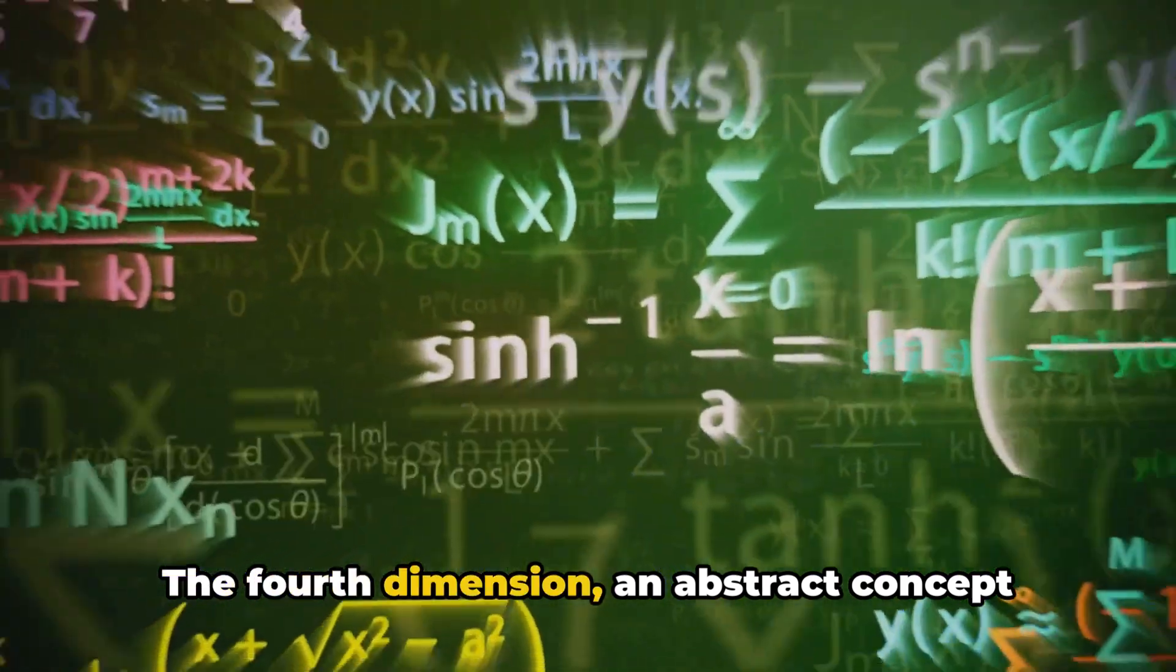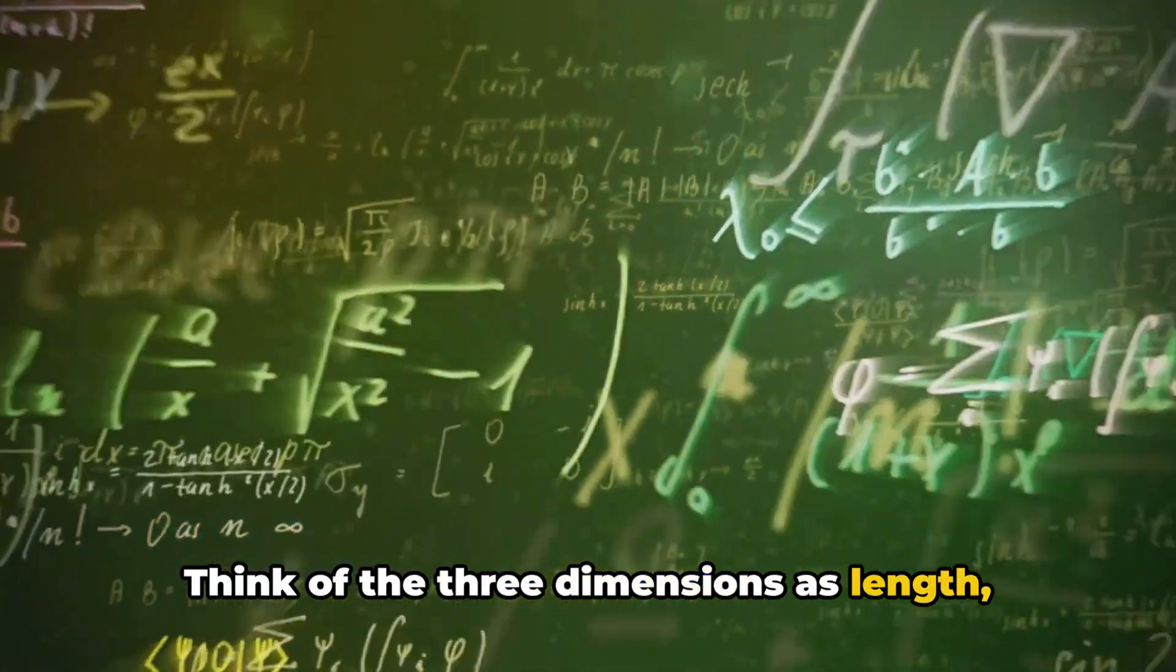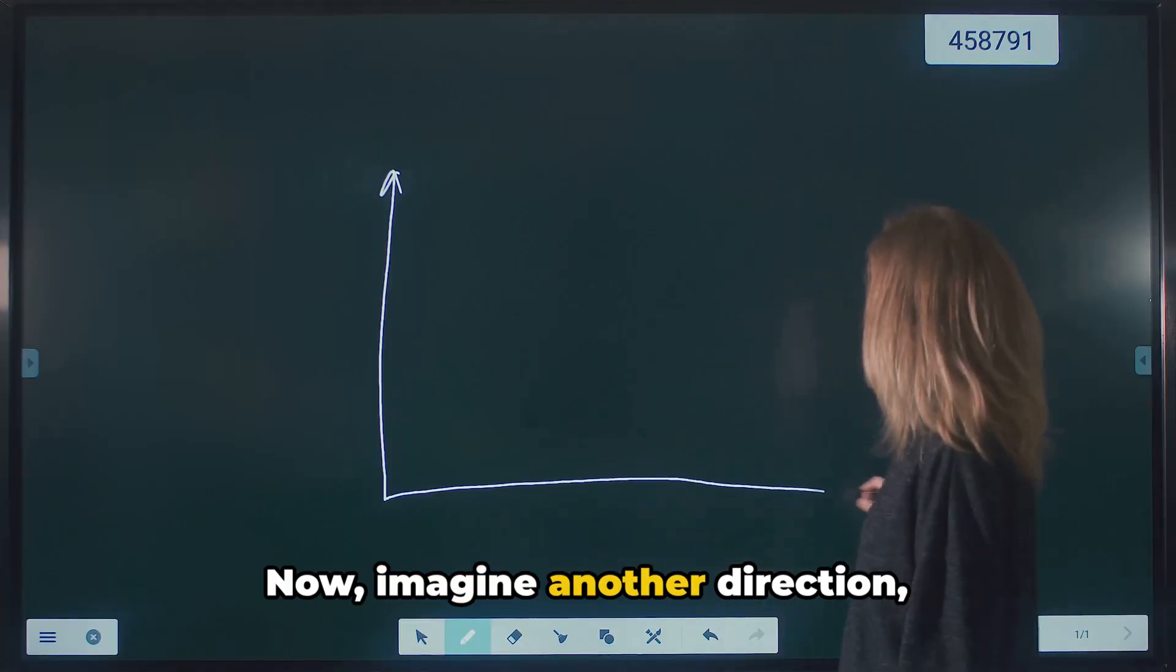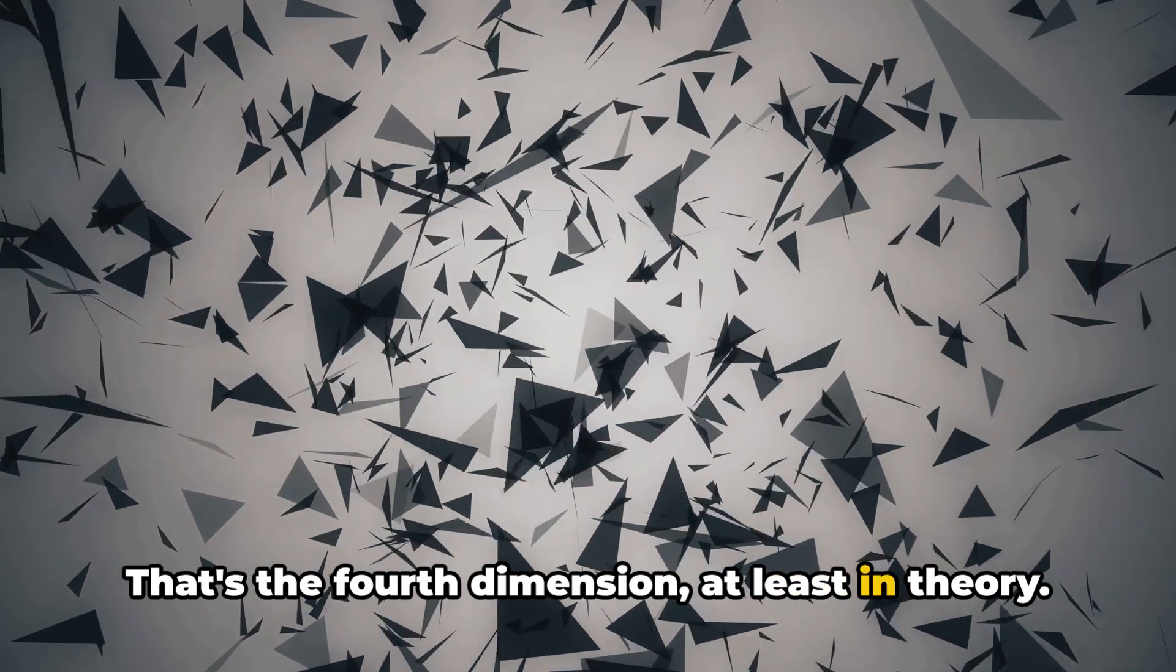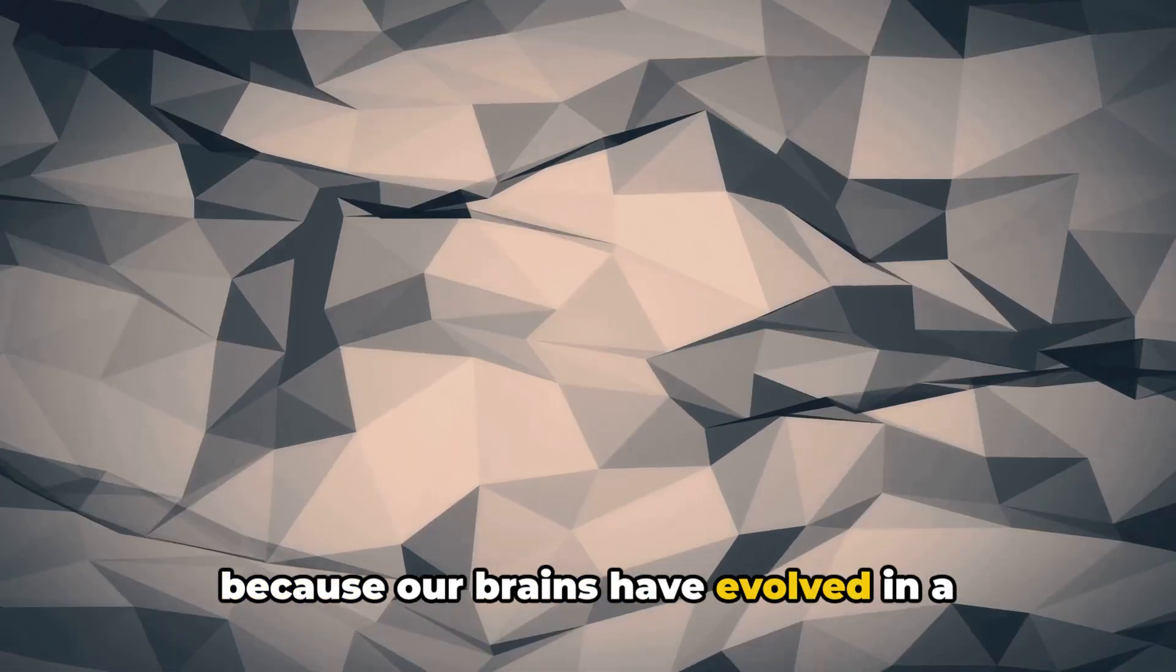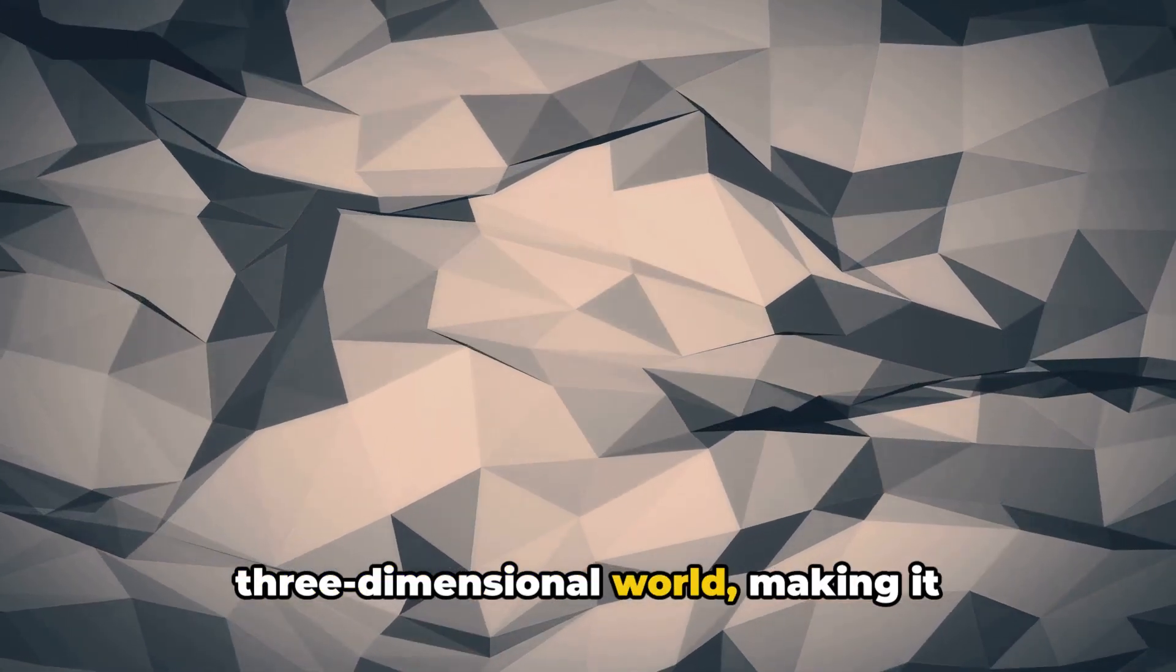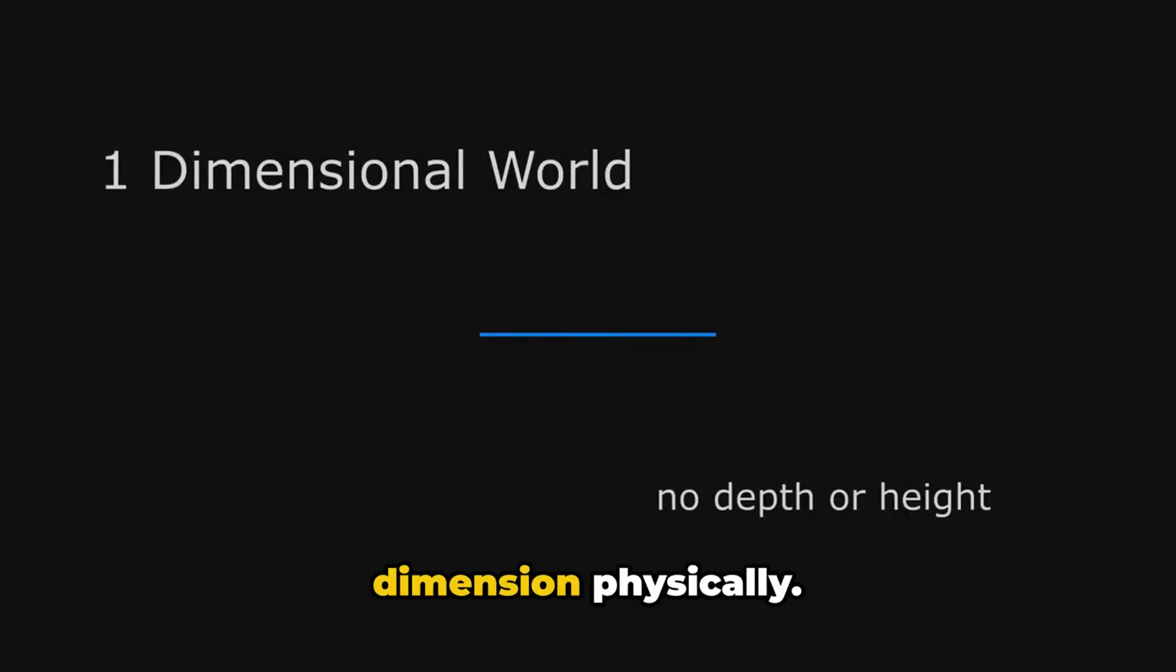The fourth dimension, an abstract concept that extends the three spatial dimensions we're familiar with. Think of the three dimensions as length, width, and height. Now imagine another direction, orthogonal to the other three. That's the fourth dimension. At least in theory, it's hard to visualize, isn't it? That's because our brains have evolved in a three-dimensional world, making it challenging for us to grasp this fourth dimension physically.